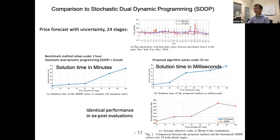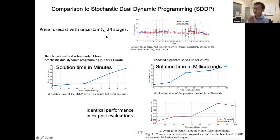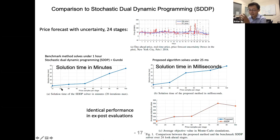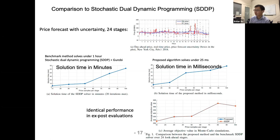Comparing with the benchmark SDDP solution on a 24-stage arbitrage problem — we use 24 not 288 stages because SDDP cannot solve 288 stages in reasonable time. Across different numbers of uncertainty nodes per stage, SDDP solution time goes up to nearly an hour, while our method solves everything in under 25 milliseconds — a huge improvement. Both methods achieve identical performance in out-of-sample Monte Carlo simulations.